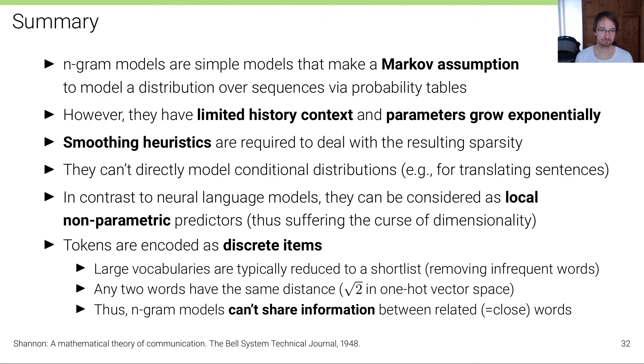To summarize, n-gram models are simple models that make a Markov assumption to model a distribution over sequences via probability tables. However, this is also the downside - they have limited history context, they cannot model long-term dependencies, and the parameters still grow exponentially with n. So smoothing heuristics are required to deal with the resulting sparsity in the dataset.